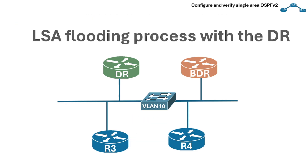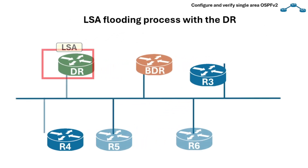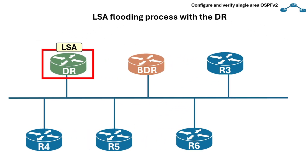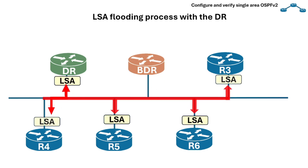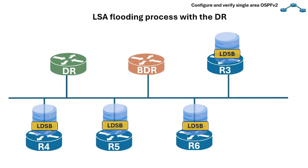Let's go through the LSA flooding process with the DR. On a shared LAN, OSPF uses the DR as a hub for flooding LSAs to avoid chaos. Non-DR/BDR routers send their LSA updates to the designated router. The DR then updates all OSPF routers on the LAN. All routers listen to this multicast, so everyone gets the updated LSDB.